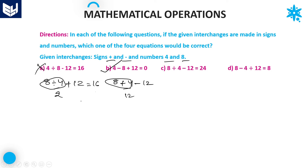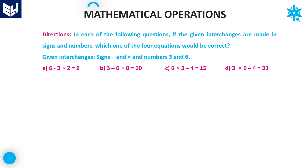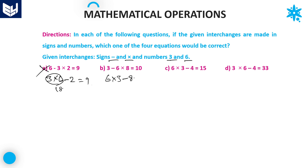The next question requires interchanging minus and multiply, with numbers three and six. Option A: six multiplied by two minus two — six times two is eighteen, eighteen minus two is not equal to nine, so option A is eliminated. Option B: six multiplied by three minus eight — six times three is eighteen, eighteen minus eight equals ten, which satisfies the condition. Therefore option B is the right answer.